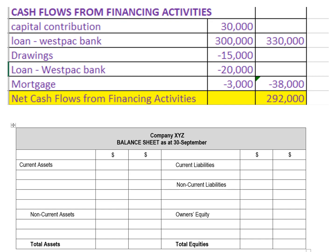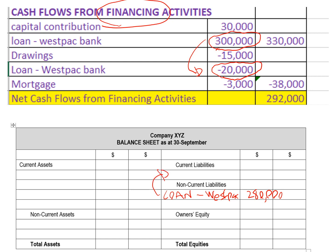Financing activities impact the equities of the business. We borrowed $300,000 — presumably to pay for the building — and we've already paid $20,000 off, so we subtract that, leaving $280,000 still owing. Some of that would be current, but without that detail I'm going to put all of it into non-current liabilities. If we had the annual repayment amount, some would go into current liabilities.